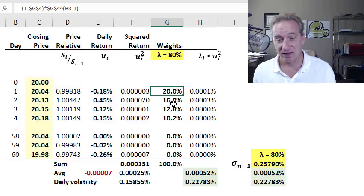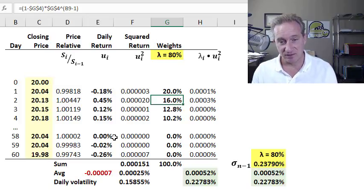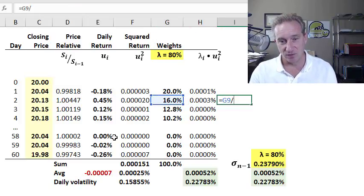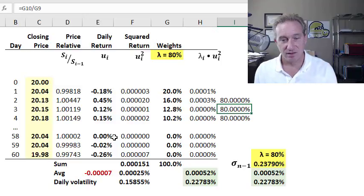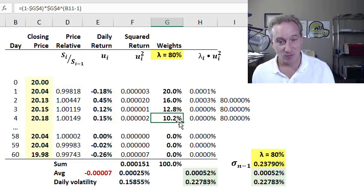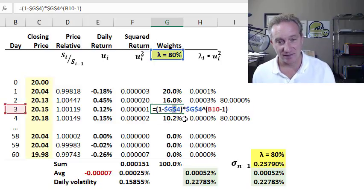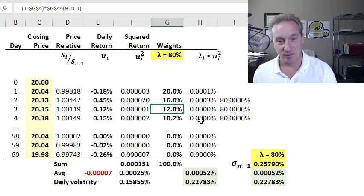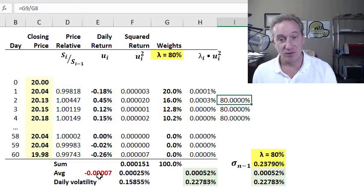Then if we go back one more day in time, back to day n minus 2, its weight is 16%. And that's because the 16% is 80% of the 20%. And then if we go back to day n minus 3, its weight of 12.8% is exactly 80% of the 16%.